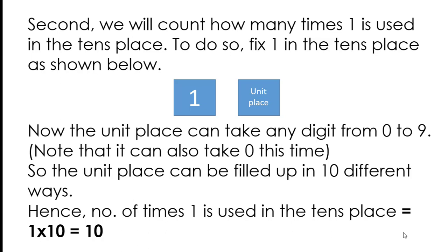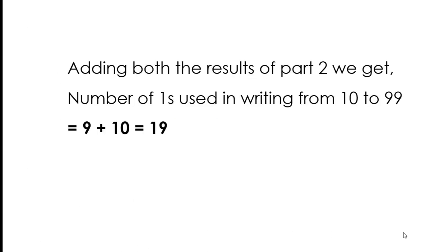Second, we count how many times 1 is used in the tens place. Fix 1 in the tens place. The units place can take any digit from 0 to 9 — note it can also take 0 this time. So the units place can be filled in 10 different ways. Hence, the number of times 1 is used in the tens place equals 1 × 10 = 10. Adding both results for Part 2, the number of ones used in writing from 10 to 99 equals 9 + 10 = 19.